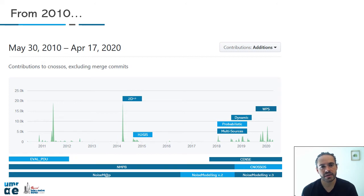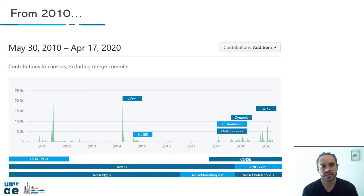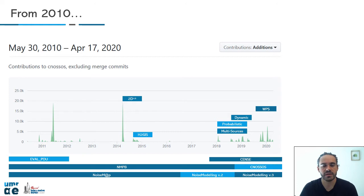Noise modeling began in 2010. The idea was to compute a really fast noise map of the city of Nort in France. It included the French model, which is NMPB, and the name of the software was noise map. In 2014, we included the 2.5D dimension, which means we include the height of the building with building extrusion. We also coupled noise modeling with H2GIS database, which is a GIS compatible database.